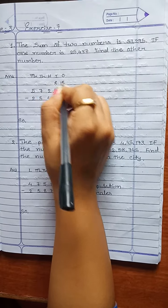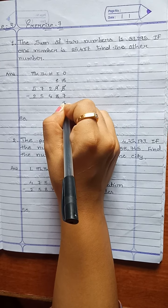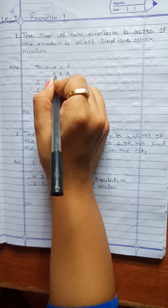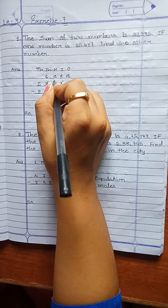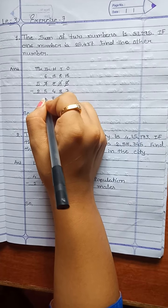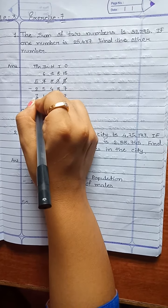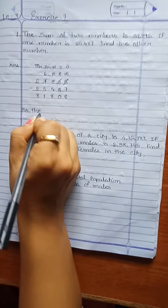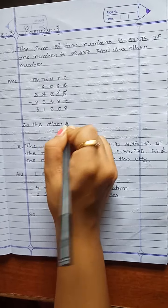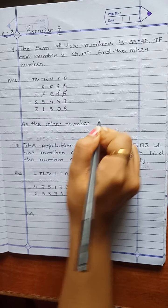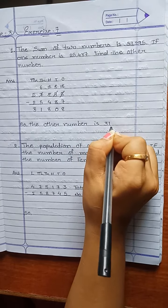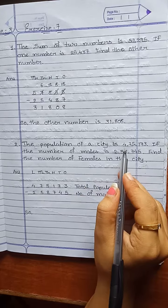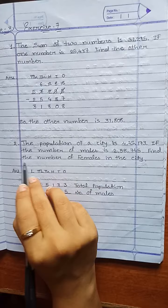Here borrow, here cut 1. 15 minus 7 is 8. 8 minus 8 is 0. 2 minus 4 not possible, so 12. Here borrow, cut 1. 12 minus 4 is 8. 6 minus 5 is 1. 5 minus 2 is 3. So the answer is 31,808. The other number is 31,808.